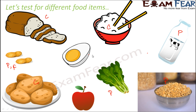Boiled egg contains a lot of proteins and also some amount of healthy fats. Some items like boiled egg, groundnuts, and even milk have multiple nutrients. We should know which food item contains which nutrient and approximately in how much amount, so that we can plan our diet accordingly. For example, a person who needs more fat can consume food which is rich in fat, and these tests help us identify that.